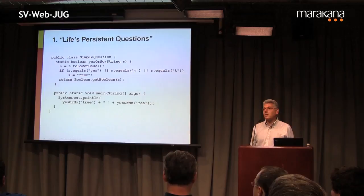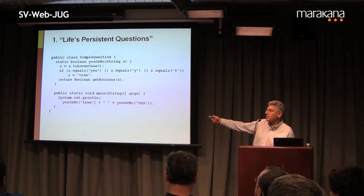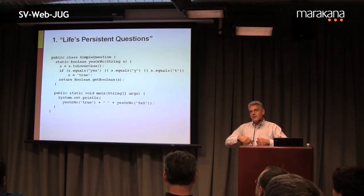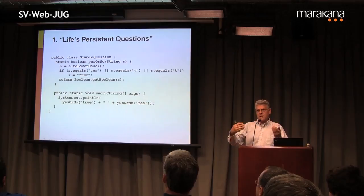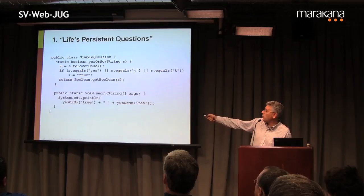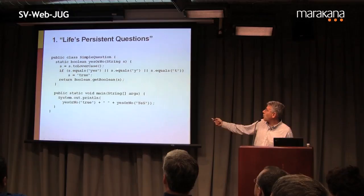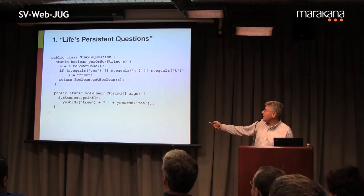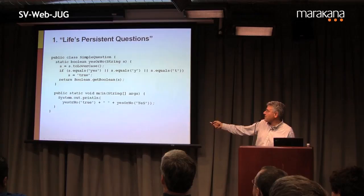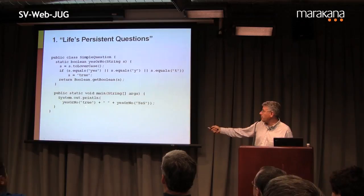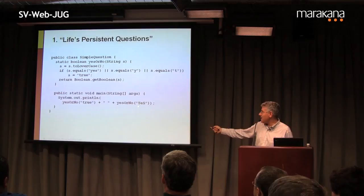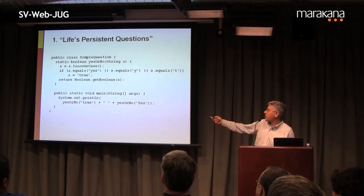The first puzzle is called Life's Persistent Questions, and the question is simply yes or no. We have a static Boolean method called yesOrNo that takes a string and returns true or false depending on whether the string represents a yes or no answer. It takes the input string, translates it to lowercase, and if the string equals "yes", "y", or "t", it replaces it with "true". Finally, we call Boolean.getBoolean to translate that string to a Boolean and return it.